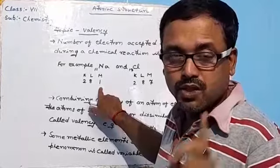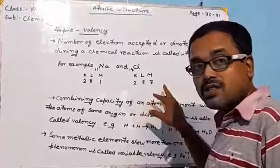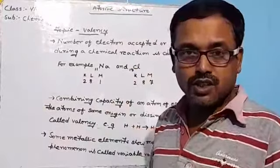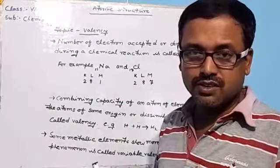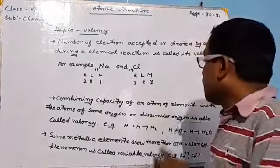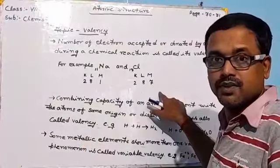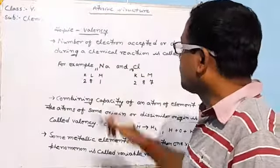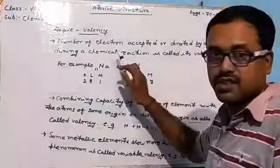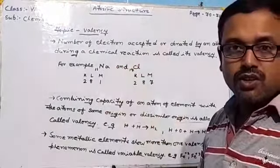On the other hand, in the chlorine atom, seven electrons are present in the last orbit. Chlorine needs one more electron to achieve the octet and attain stability. So it can accept one electron from outside, meaning its valency is also one.